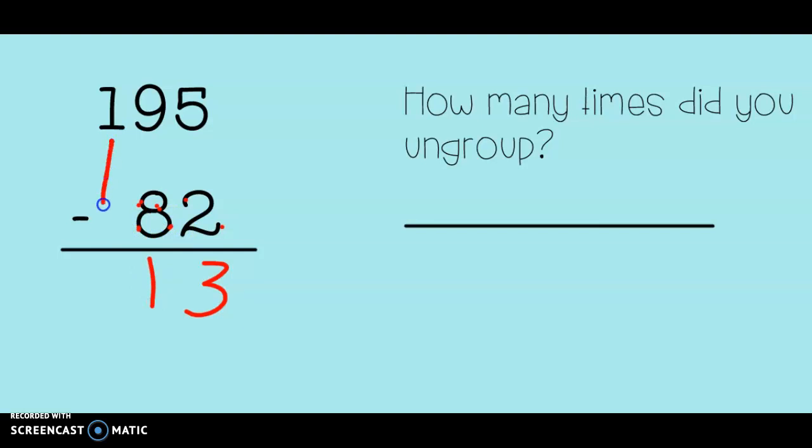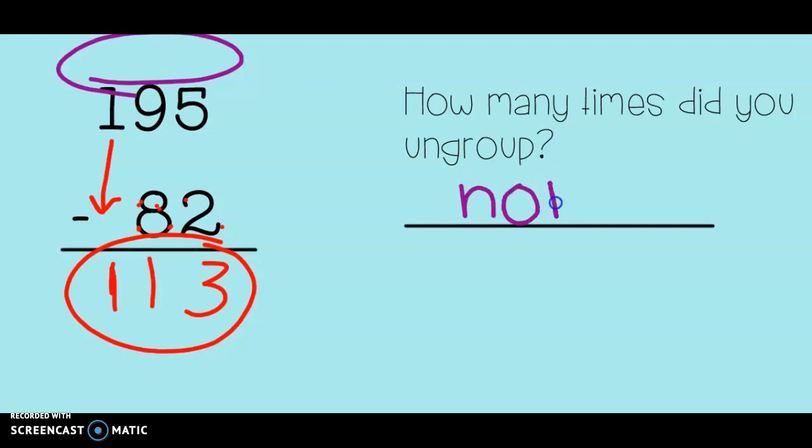And last, I have 100 with no number underneath so I can just pull it straight down. So did I need to ungroup at all in this problem? Let's look up at the top. I have no ungroupings. That means that I'm going to write none. I did not need to ungroup at all.